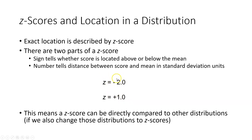If I were to interpret the entire z-score — both of its components together — I would say the score that yielded a z of negative 2 was two standard deviations below the mean. The original score that led to a z of positive 1 was one standard deviation above the mean. This means that a z-score can be directly compared to other distributions if we also change those distributions to z-scores. I'll give examples of what that looks like in a minute.